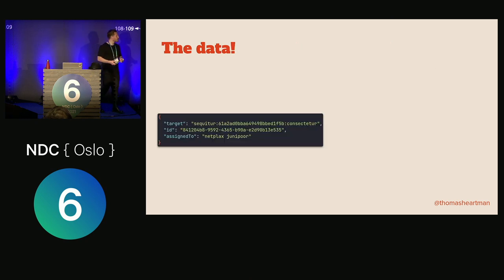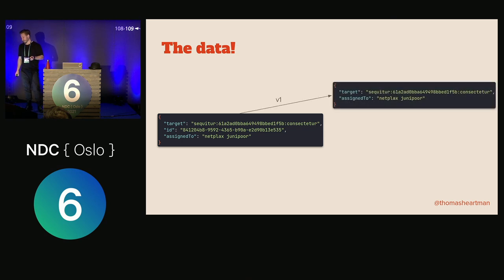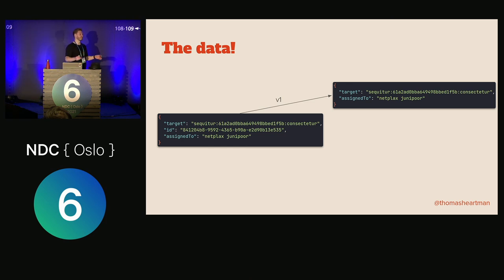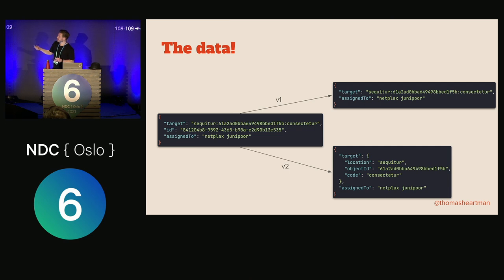We also need to make some changes: right now the target string contains three separate sections and we'd like to split them out. Here's the data we're getting in — a JSON object with a target, an ID, and an assigned-to. Originally in version one, all it did was remove the ID, because we don't want to leak that to whoever is reading the data. It was a super simple transformation — just remove ID. Now we want to split target into three separate strings, splitting on the colon, to make it easier to read.